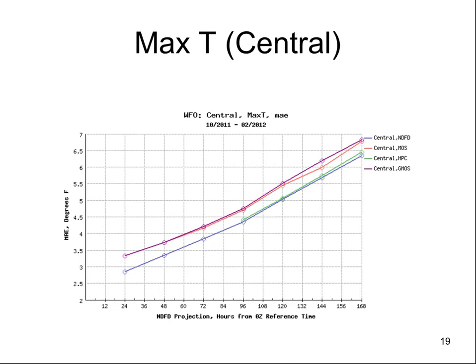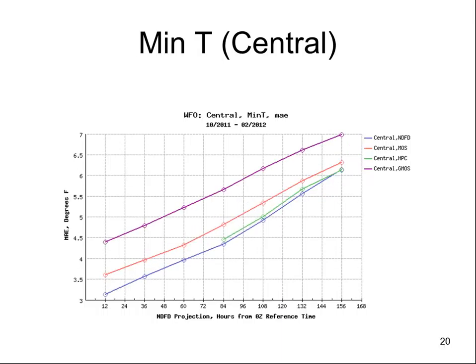Now our region — Central Region. For MAX-T from the 0Z run only, it's pretty close to the HPC forecast, while the guidance products are a step away from HPC and Central Region NDFD. For MIN-T, NDFD is basically the winner but very close with HPC. The gridded MOS MIN-T is just really bad this last winter — I'm not sure if it's just this one season or whether it's been consistently bad.